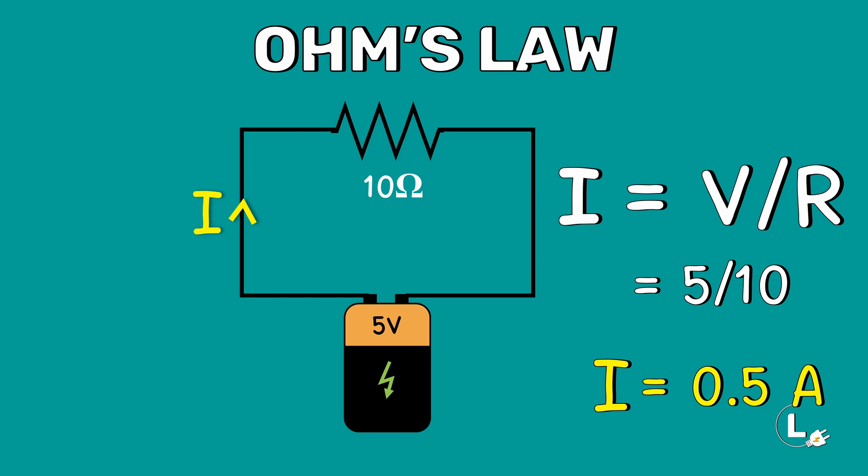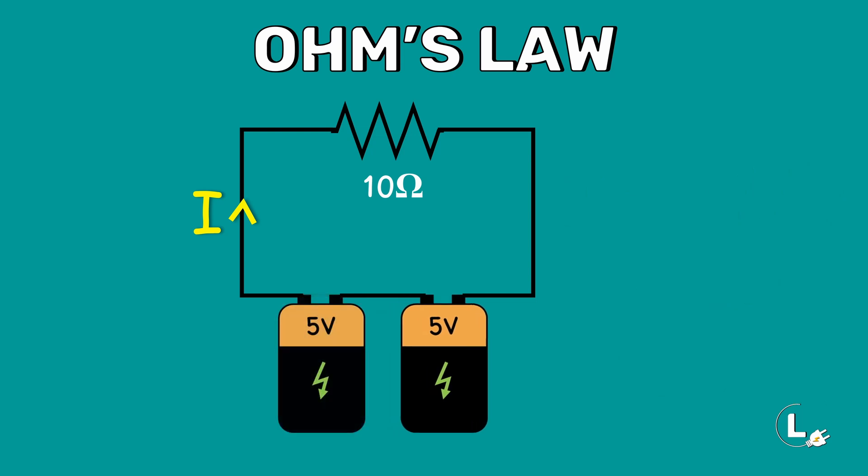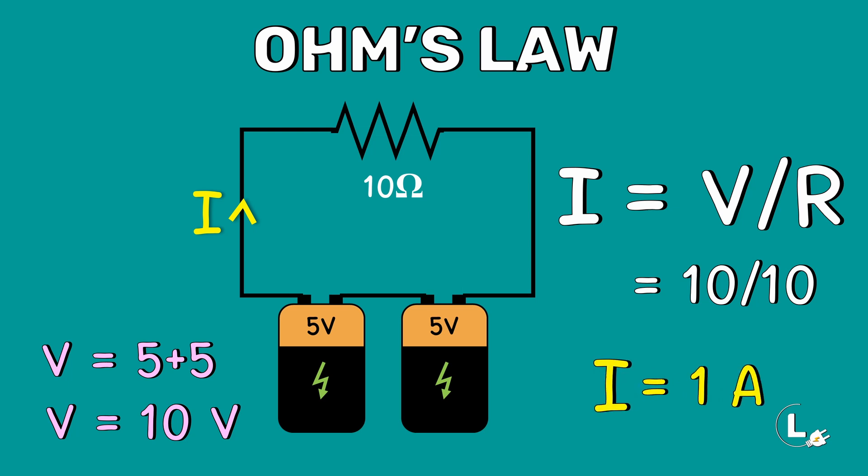Let's make a simple modification to this circuit. We will add one more 5V battery in this circuit. Now, what happens to the current value? Here, we have an additional 5V battery connected in series. Therefore, the total voltage is 10V. Now, the current I is 1A.